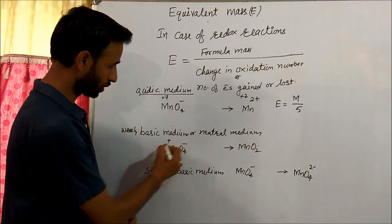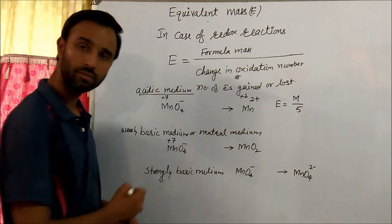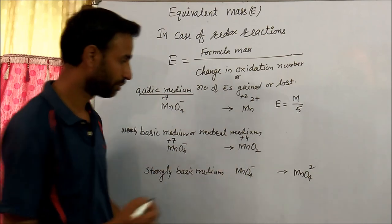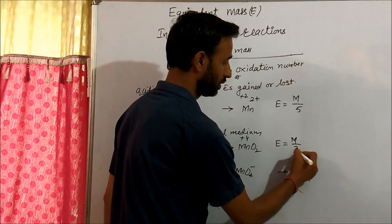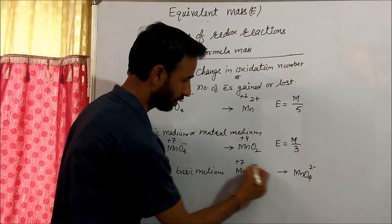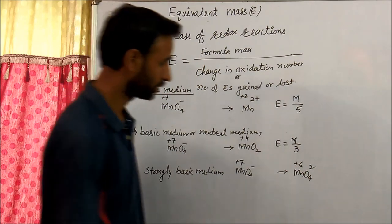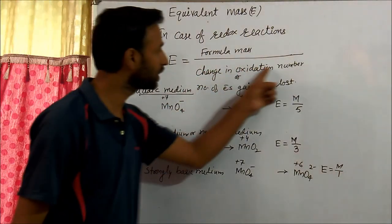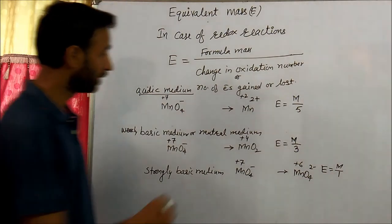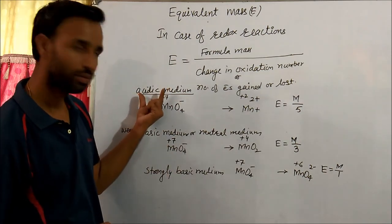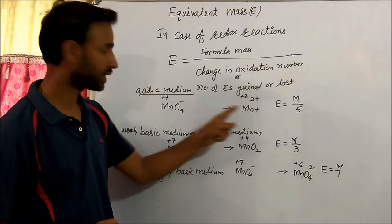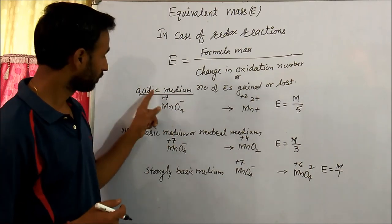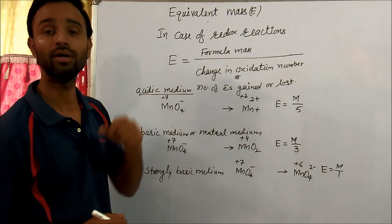In weakly basic or neutral medium, MnO₄⁻ gives MnO₂. Oxidation number of Mn in MnO₄⁻ is +7, and in MnO₂ it is +4. The change is 3, so equivalent mass is M by 3. In strongly basic medium, MnO₄⁻ gives MnO₄²⁻, where Mn is +6. Change is only 1, so equivalent mass is M by 1. You can also find the electrons by balancing the half-reaction; I have uploaded a video on balancing redox reactions.